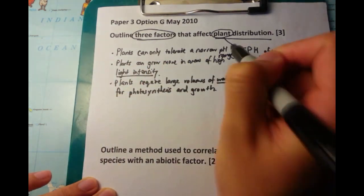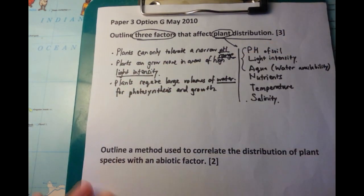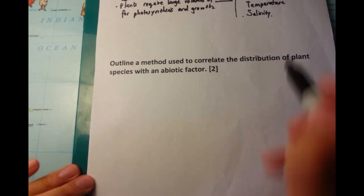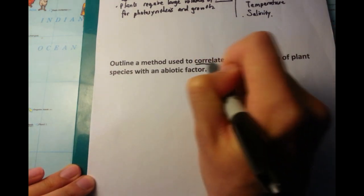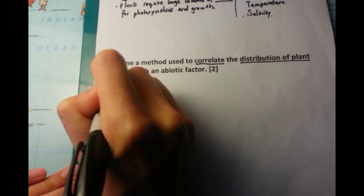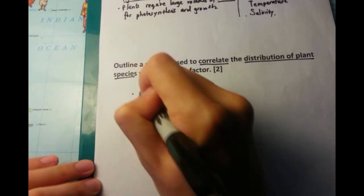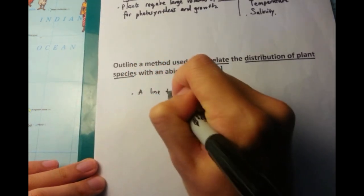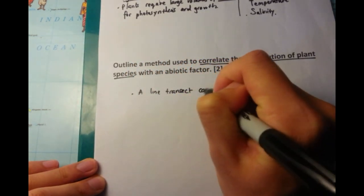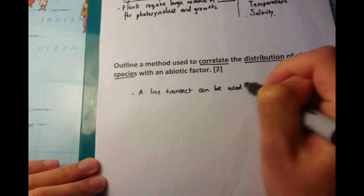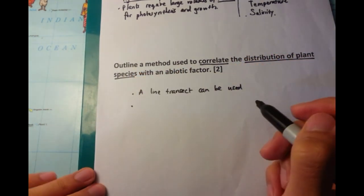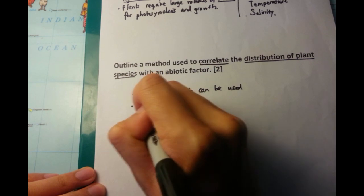Now, the next question we're going to talk about is outline a method used to correlate the distribution of plant species with an abiotic factor. The thing you need to know is you need to talk about line transects or transects in general. I'm going to talk about a line transect because that's the one I'm comfortable with.